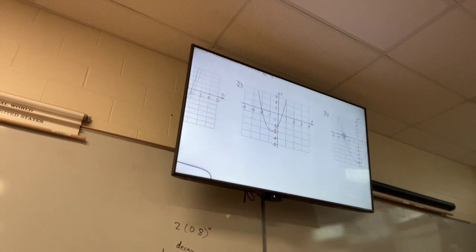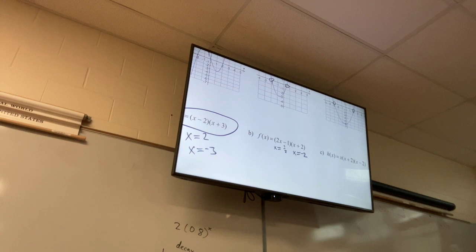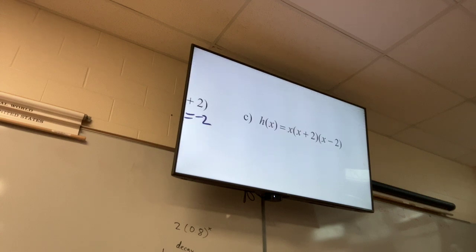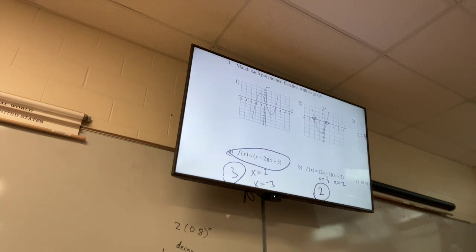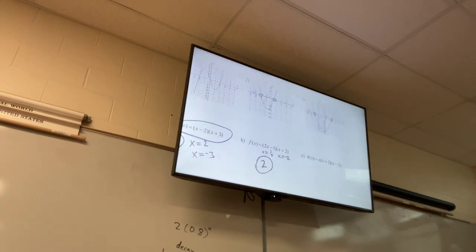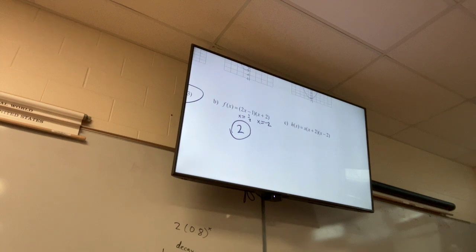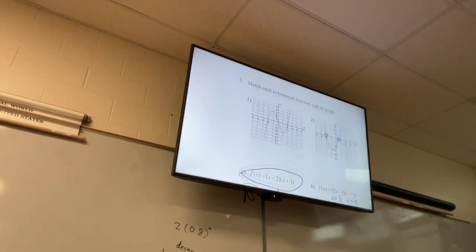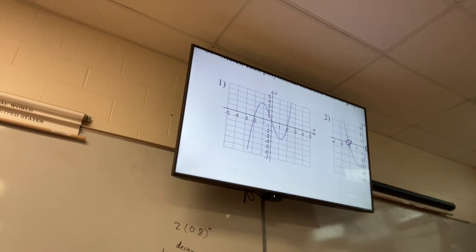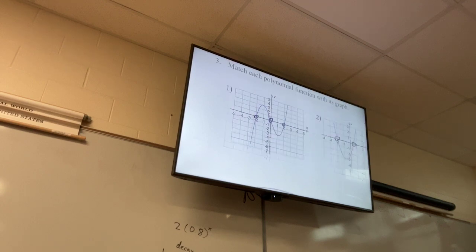Over here, the zeros are x equals negative 2 and x equals one-half — that's graph 2. For C, it's process of elimination — that's graph 1. The zeros are 0, negative 2, and positive 2.